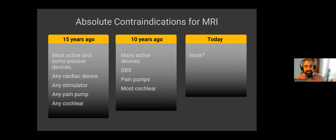10 years ago, we were starting to do more stuff. But still, we didn't scan a lot of active devices. No DBS for sure, no pain pumps. But today, I mean, we scan everything. I can't think of an absolute contraindication. There's certainly some patients I wouldn't scan because the risks exceed the benefits for that patient. But I cannot think of a single device or implant or on plant that is an absolute contraindication. I will at least consider MRI for every patient at this point. And so that's a big change from where we started.